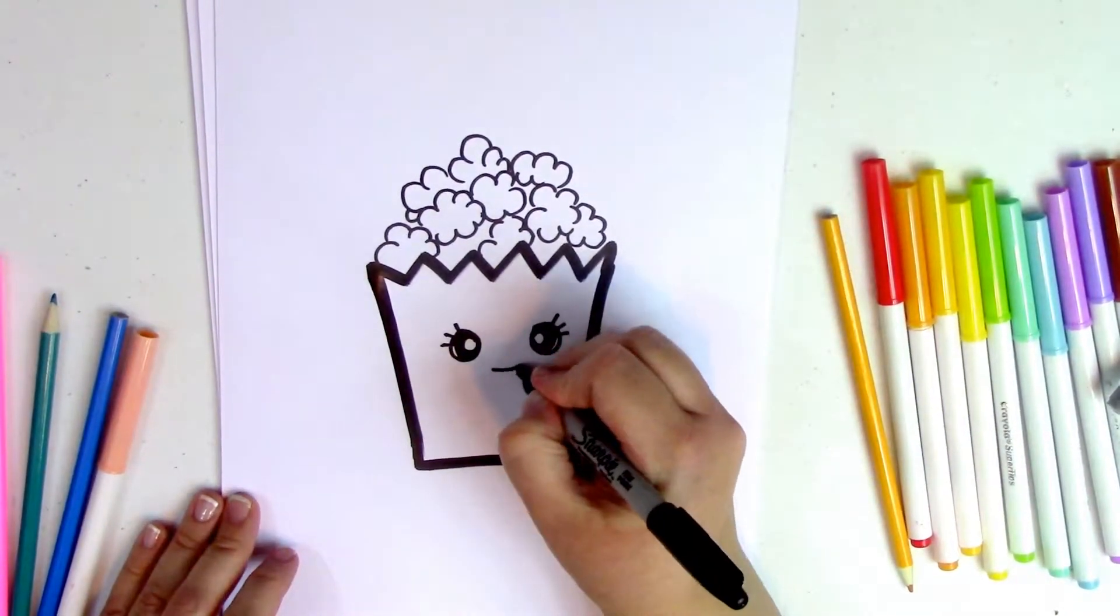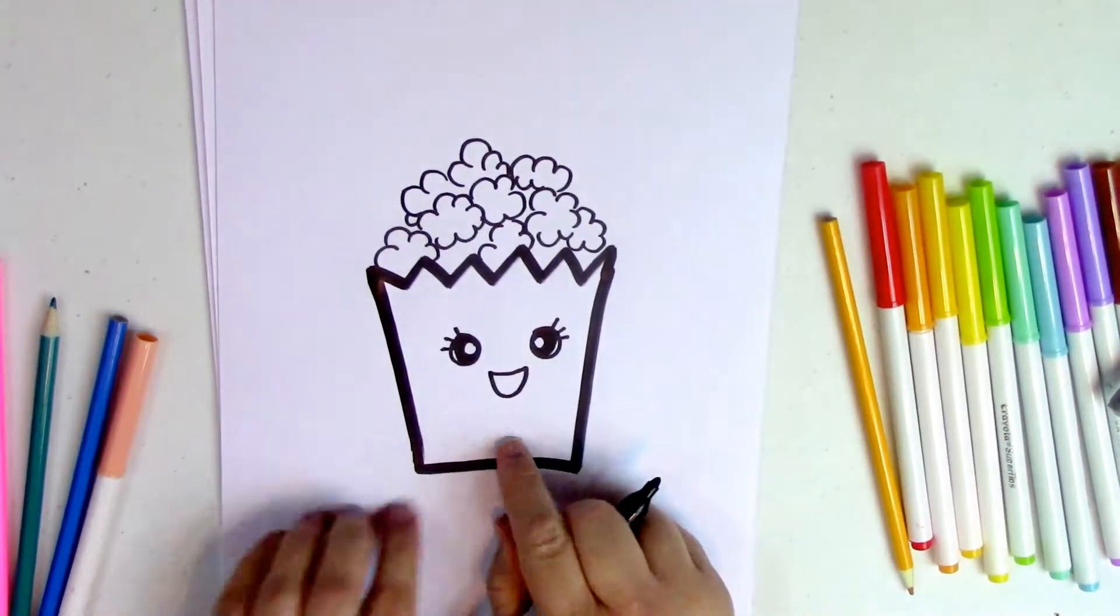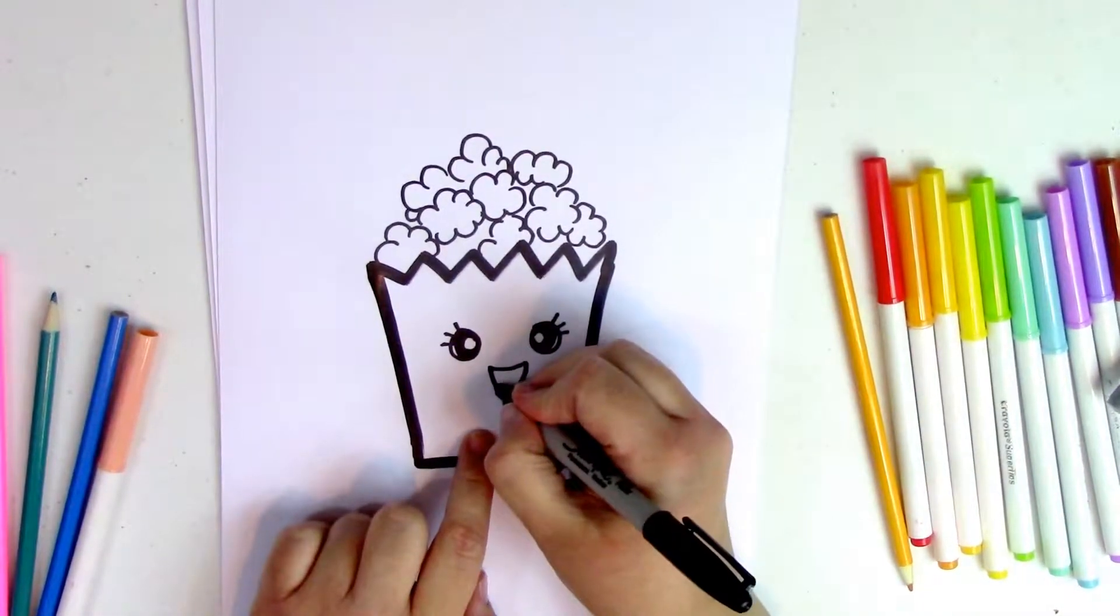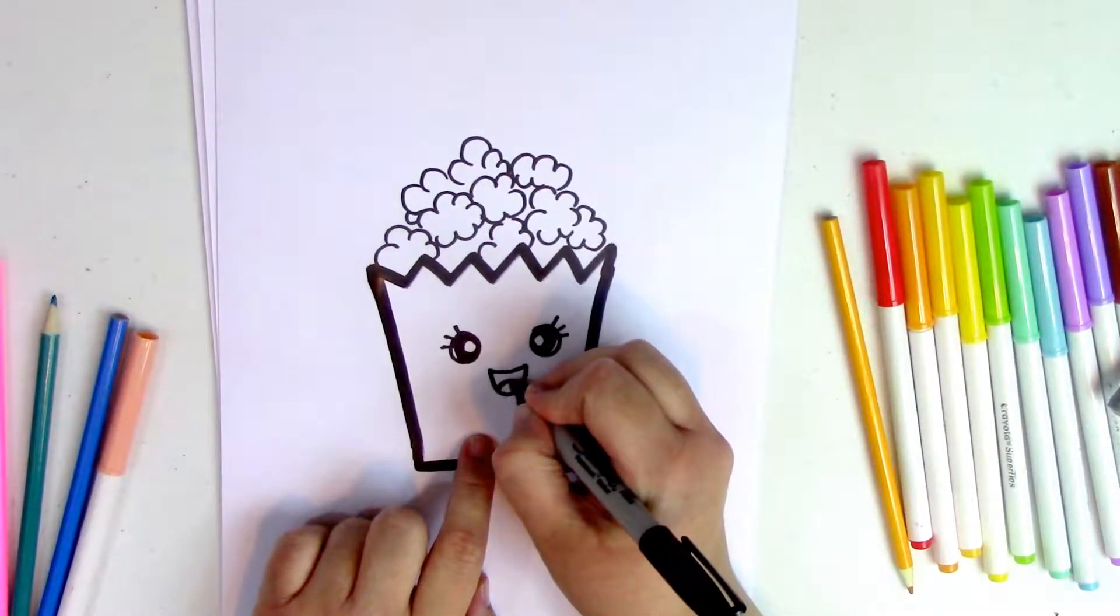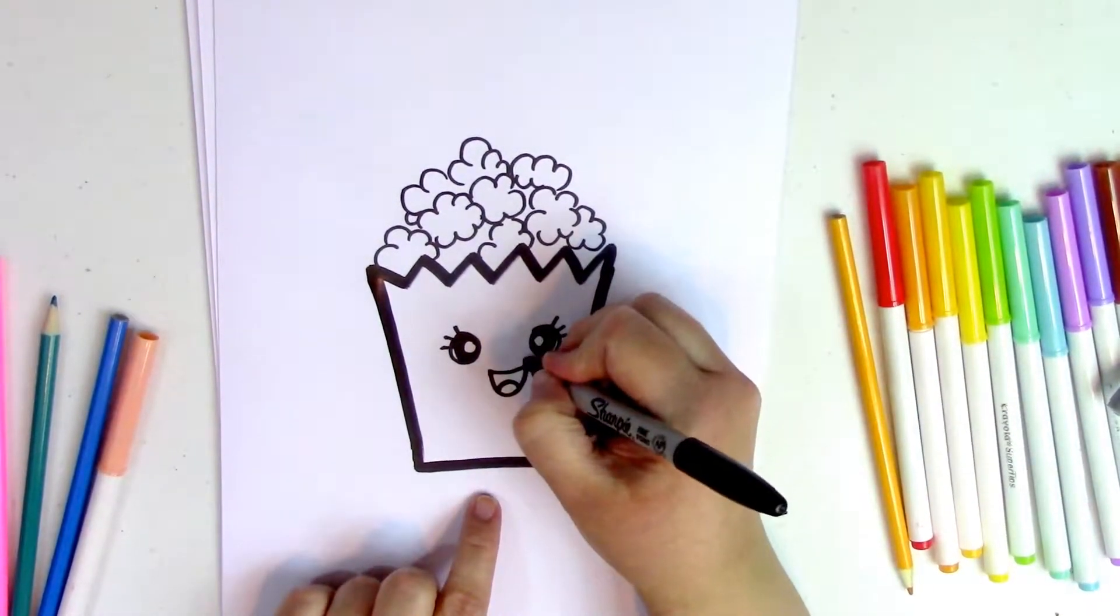And then we're going to draw a little smile here. We're going to draw a little bit different smile. It's going to be kind of like a U with a line across going across the top, and then inside to make the tongue, we're going to draw an upside-down U. There you go. And then we're going to draw two little smiley marks.